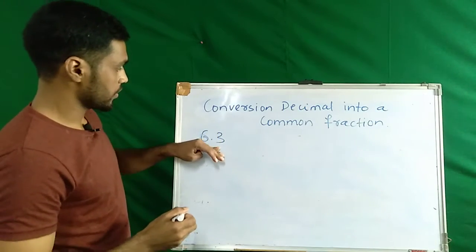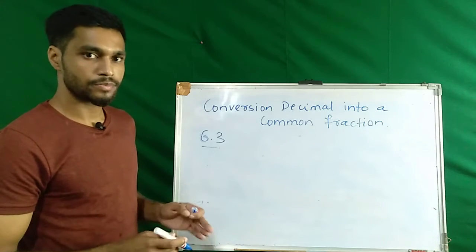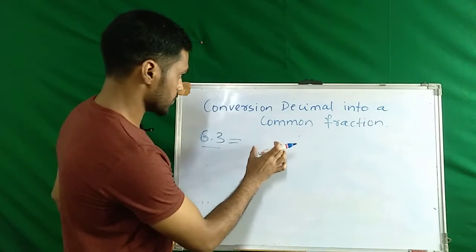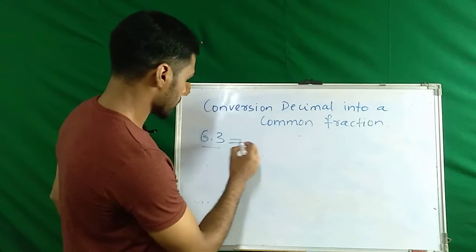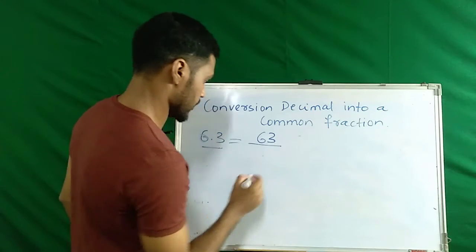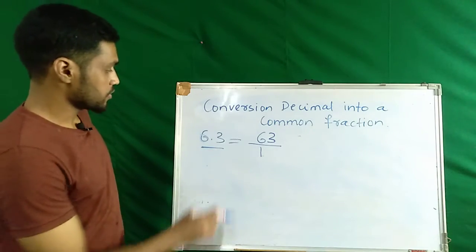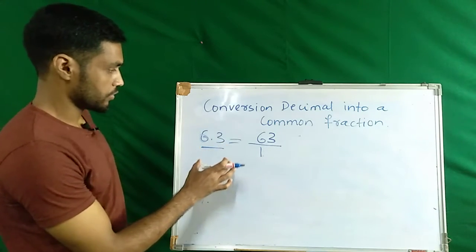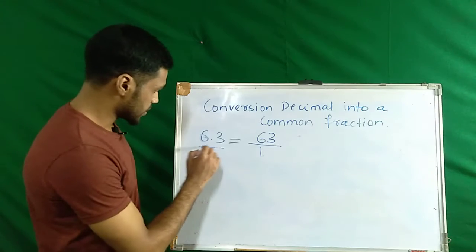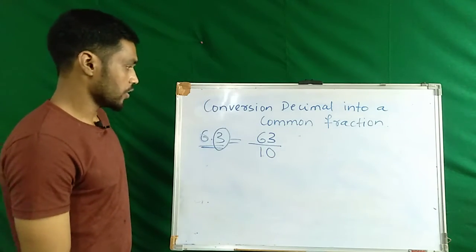Here we are given a decimal. To convert a decimal into a common fraction, we have to write the number without the decimal point. Then write 1, and as per the place of decimal, we have to write zeros on the right side of the 1. In this decimal we have only 1 decimal place, so we have to write one zero on the right side of the 1.